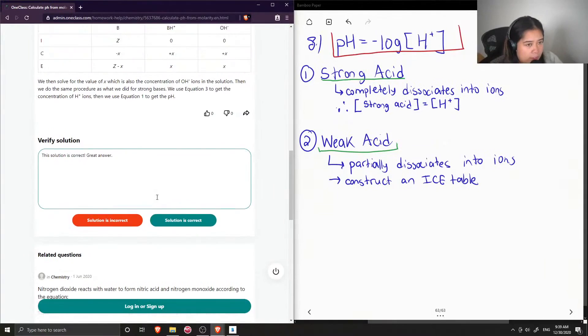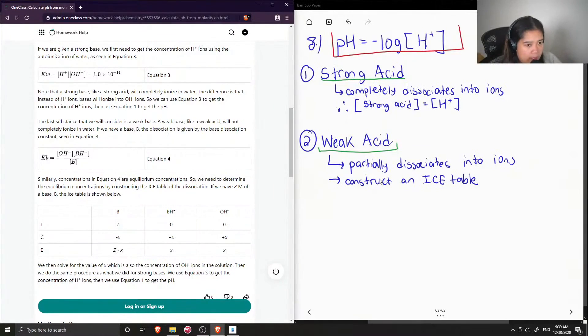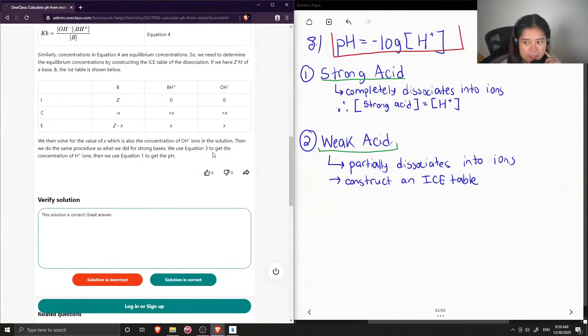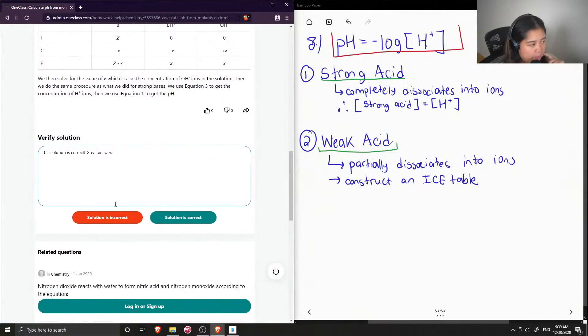So just note that every time you have either a strong acid or a strong base, it's easy to find the concentration of H+ ions, but once you have a weak acid and a weak base, you'd pretty much just add an additional step. Thank you.